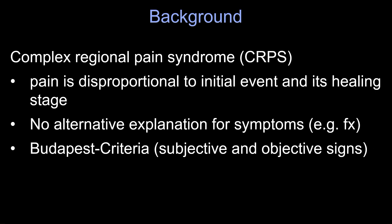The definition of complex regional pain syndrome is basically a pain syndrome that is disproportional to the initial event, such as a trauma or surgery, and its corresponding healing stage. Very importantly, there cannot be an alternative explanation for the symptoms. So if a patient has a fracture, a stress fracture, or an infection, then it's not a CRPS.